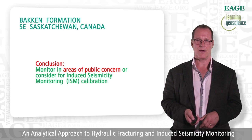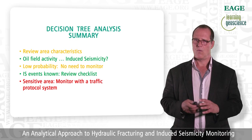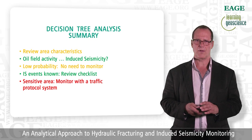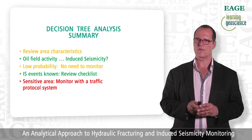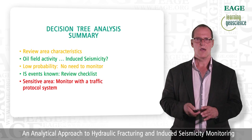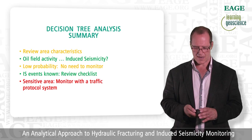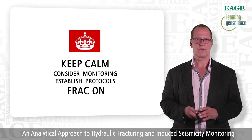To summarize: if you go through the decision tree analysis and review your area characteristics, and your oilfield activity has low probability of induced seismicity, you can probably save your company some money and don't need to monitor. But if induced seismicity events are known, review the checklist and go through all the details. Bottom line: if you're in an area of public sensitivity, you should monitor and have a traffic light protocol system in place so that if something happens, you can explain to the public what you did, why, and how you'll proceed if magnitudes get higher. It will increase trust and understanding between your company and the general public. Keep calm, consider monitoring, have your protocols in place — and frack on. Thank you for your time.